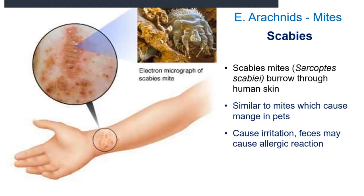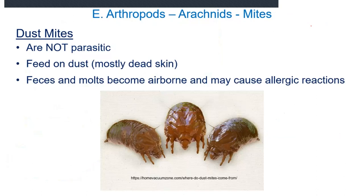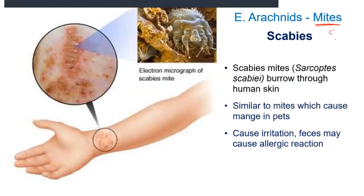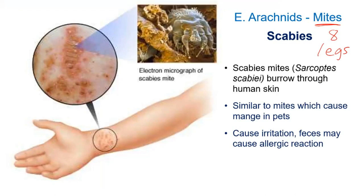Besides insects, we also have other arthropods — mites. Mites are not insects; mites have eight legs, so they're more closely related to spiders. There are a few mites out there. One species that does infect humans from time to time is scabies. These things burrow into the skin and can live there, causing irritation, itchiness, and blistering.